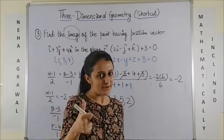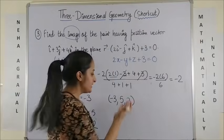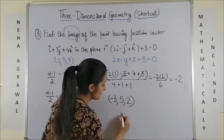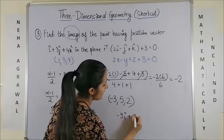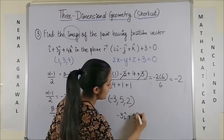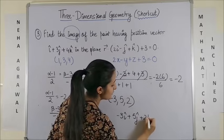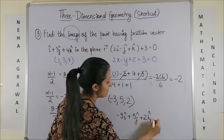In case you wish to write it in vector form, you can write it as minus 3i-cap plus 5j-cap plus 2k-cap.